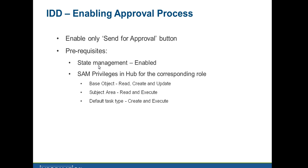The next prerequisite is you must have the SAM privileges in Hub for the corresponding role. You must have read, create, and update privileges for the base object; read and execute privileges for the subject area; and create and execute privileges for the default task type. The default task type in IDD is review no approve by default, though it can be configured depending on business requirements.